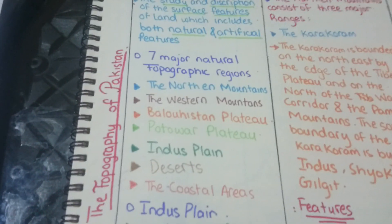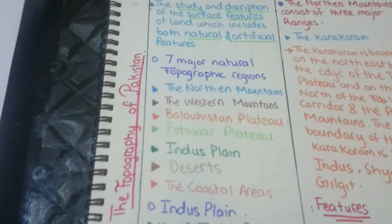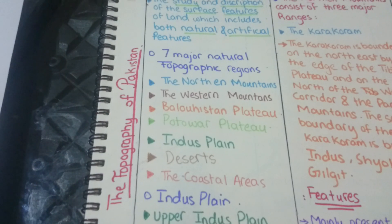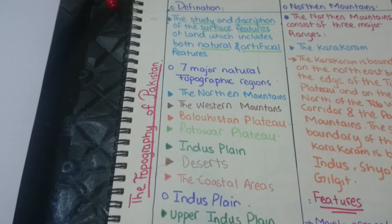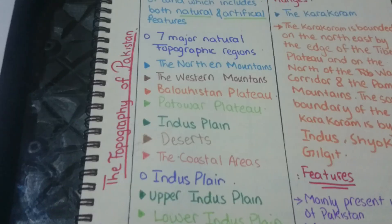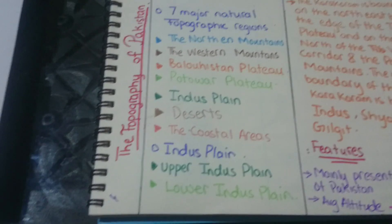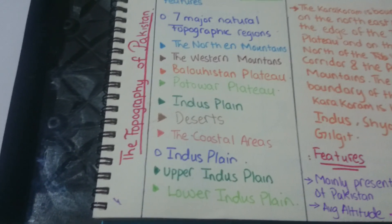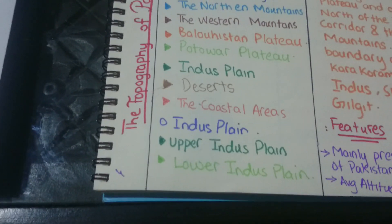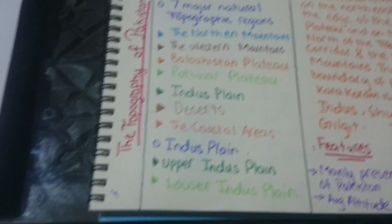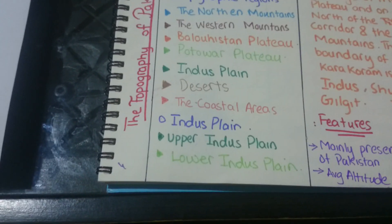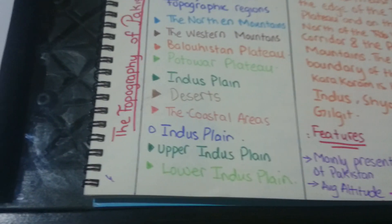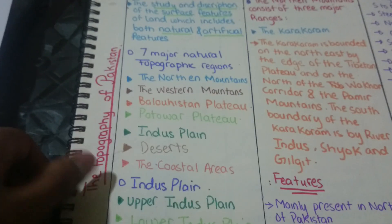The definition of topography is the study and description of the surface features of land, which include both natural and artificial features. There are seven major natural topographical regions: the Northern Mountains, the Western Mountains, the Balochistan Plateau, Potohar Plateau, Indus Plain (Upper and Lower), Deserts, and Coastal Areas.